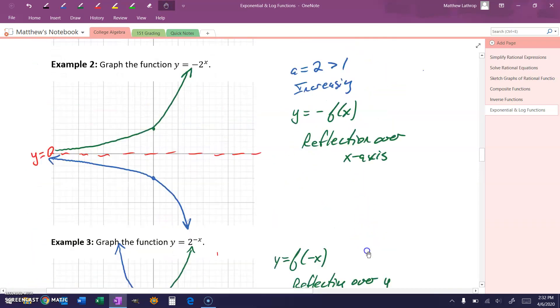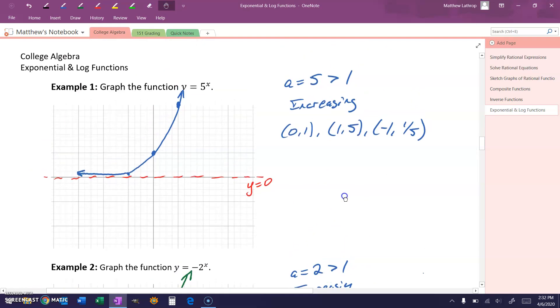Again, we could go back and add more points here. For instance, like we did in example 1, we plotted those three specific points. But at this point, as long as we know the general shape that our exponential function is going to take, we can simply sketch out that curve.